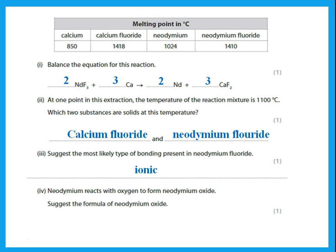Neodymium reacts with oxygen to form neodymium oxide — state the formula of neodymium oxide. To find the valency of neodymium, look at the first equation given: NdF3. Fluorine has a valency of 1, and there are 3 of them, so Nd must have a valency of 3. The formula is Nd2O3 — put 3 under oxygen (valency 2) and 2 under Nd (valency 3).